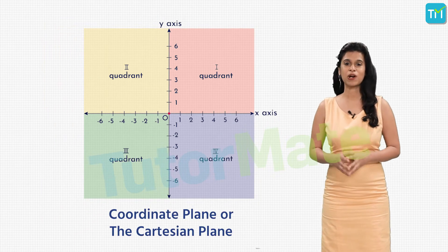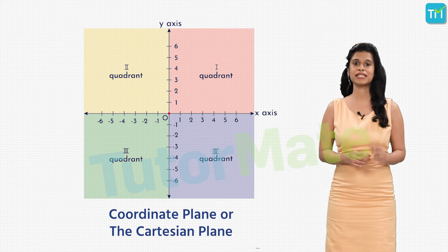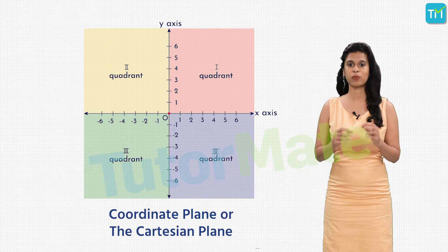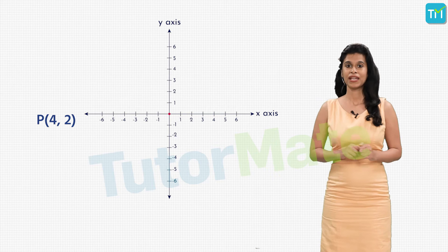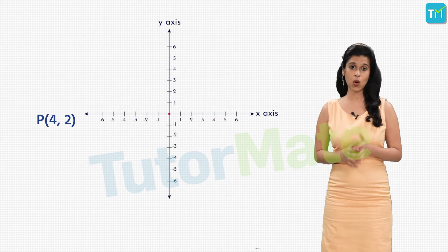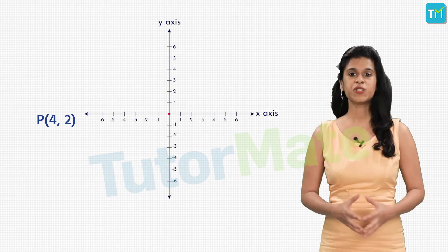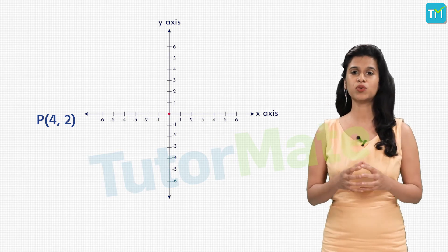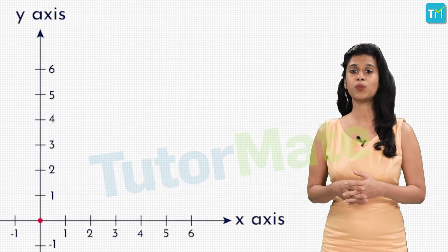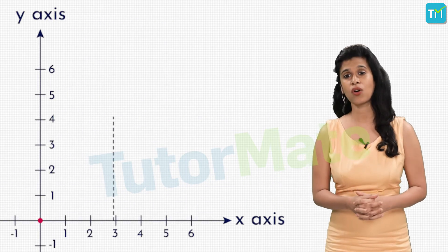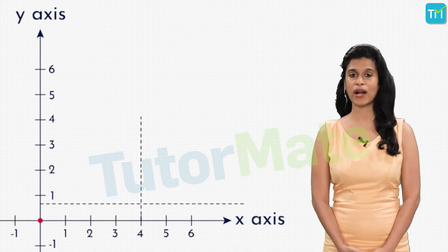Apart from learning about the Cartesian plane, we also saw how the coordinates are defined for any point plotted on the Cartesian plane. For example, look at this point P here. Point P has its x coordinate as 4 while its y coordinate is equal to 2, which means that if you wanted to move to point P starting from the origin, you would have to walk four units to the right on the x-axis and then climb up two units in the y direction.